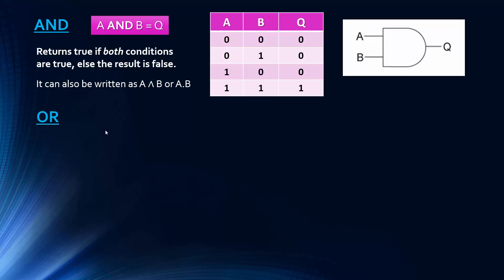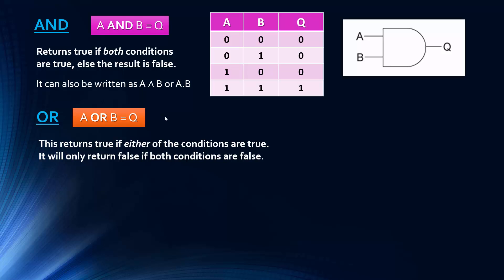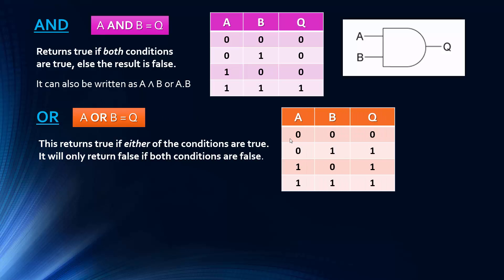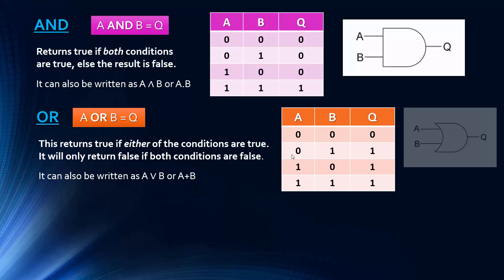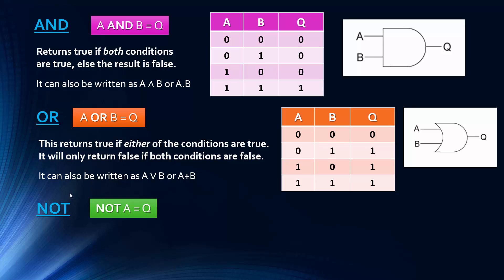The next operator is OR. OR returns true if either of the conditions is true, and only returns false if both conditions are false — both zero. I like to think of OR as being a bit more flexible or less picky than the AND gate. Alternative notation: OR can be written as A ∨ B or A+B. So zero plus zero is zero, zero plus one is one, and so on.